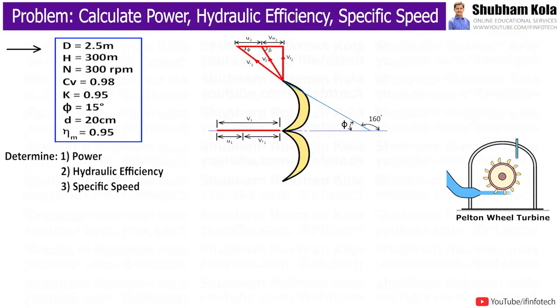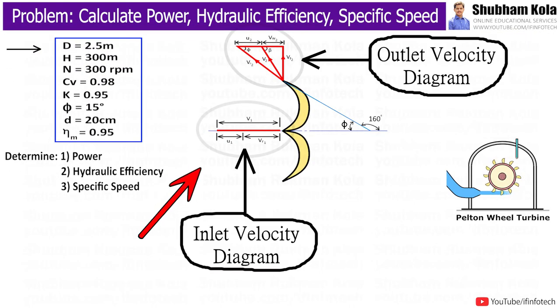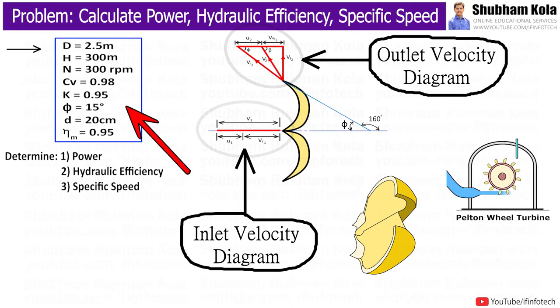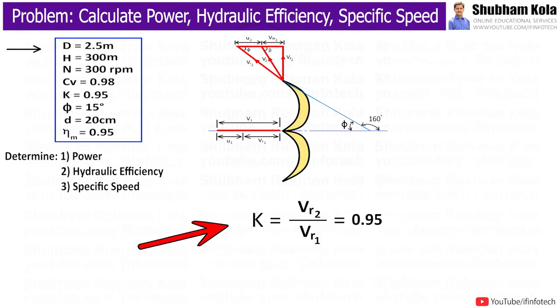Before going to solve this numerical, first I'll draw inlet-outlet velocity triangles of Pelton-wheel, and I'll write given data. Here, friction coefficient for vanes, noted as capital K, is the ratio of relative velocities, i.e. Vr2 by Vr1, which is given as 0.95.